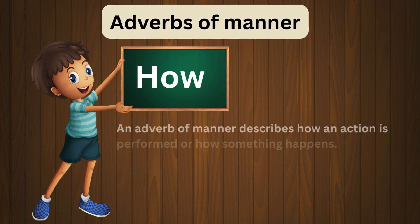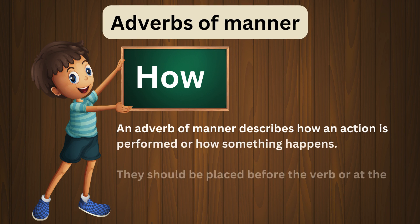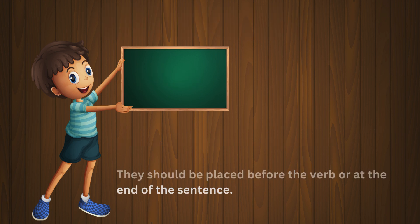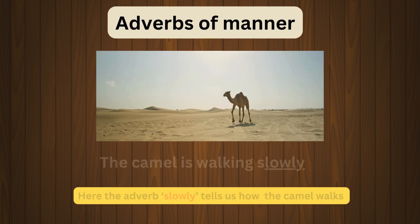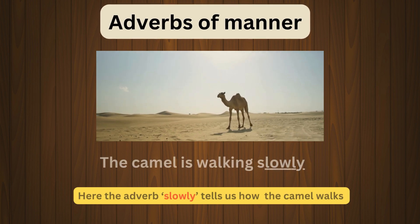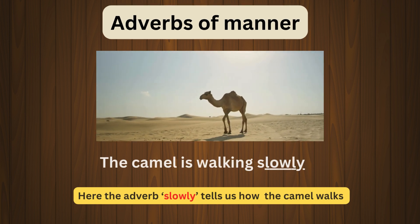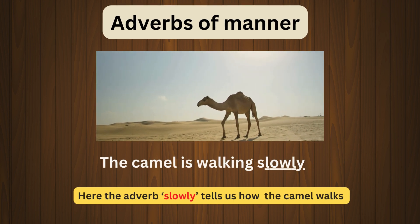First we see Adverbs of manner. An adverb of manner describes how an action is performed or how something happens. They should be placed before the verb or at the end of the sentence. For example: The camel is walking slowly. Here the adverb 'slowly' tells us how the camel walks.